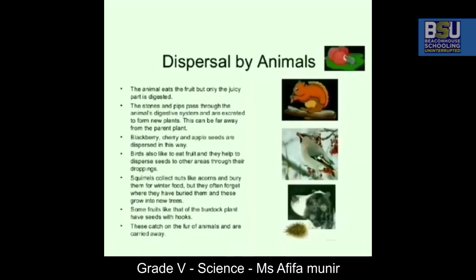Then comes dispersal by animals. Animals eat fruits, but only the juicy part is digested. The stones and the pips pass out through the animal's digestive system and are excreted, going on to form new plants.